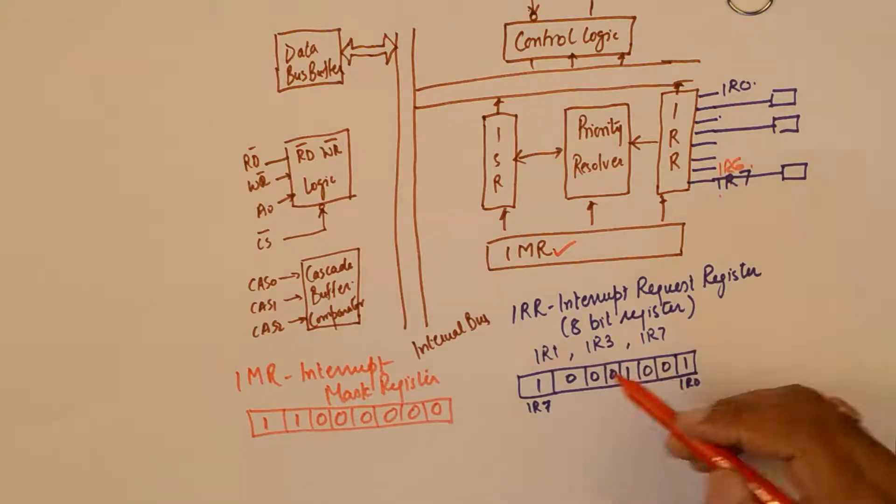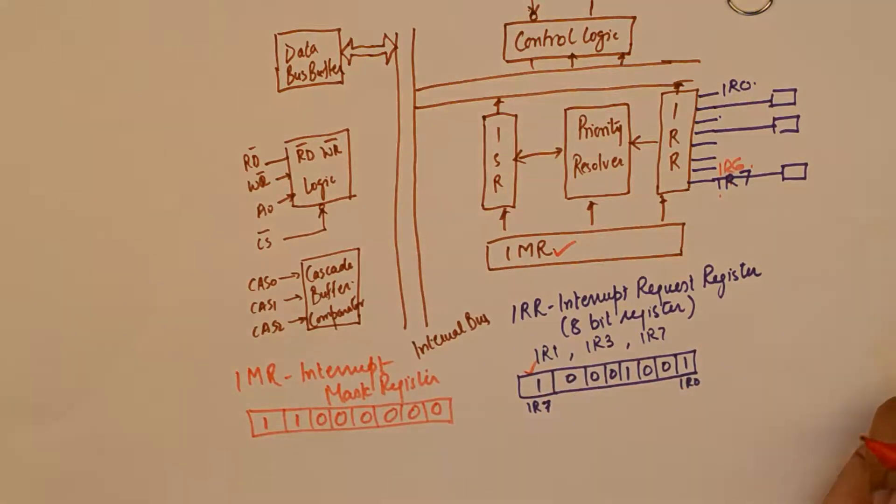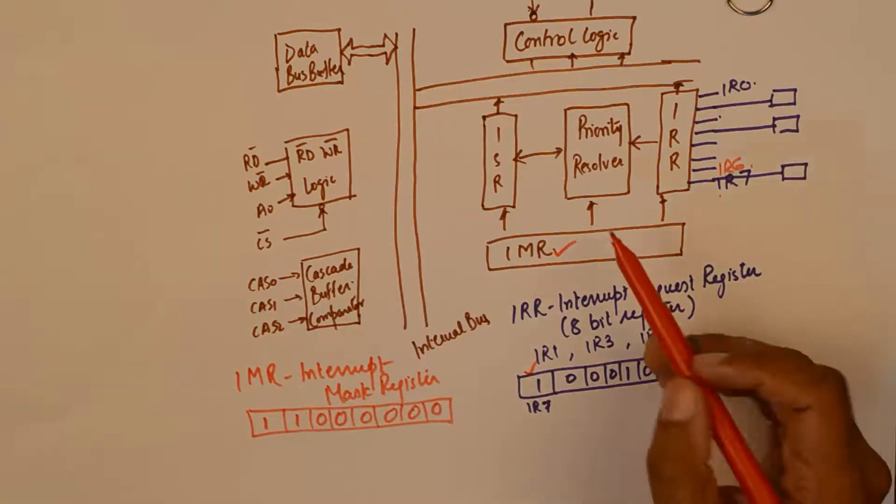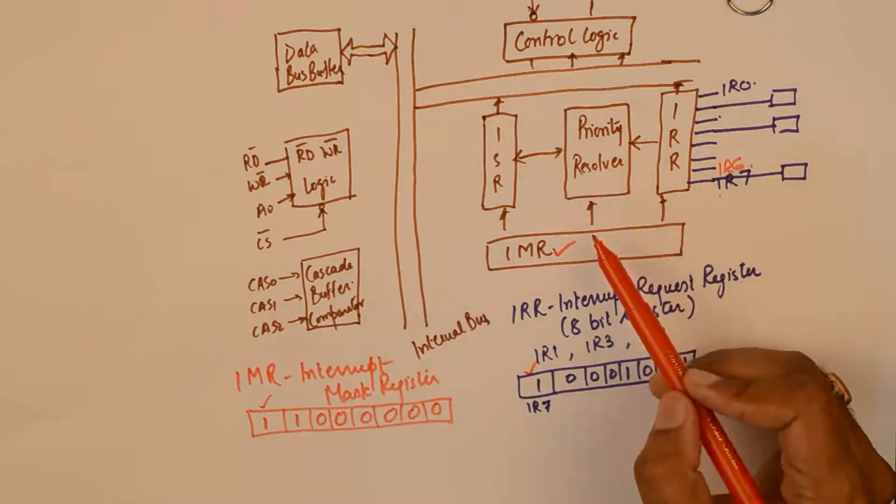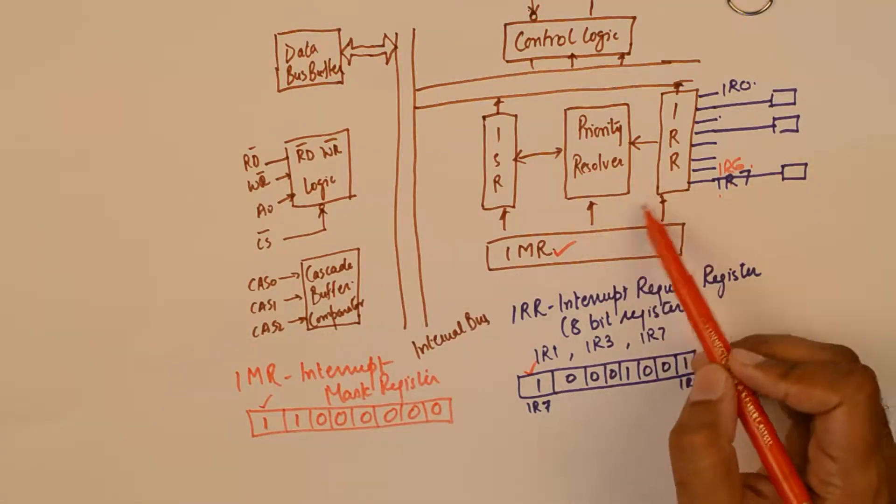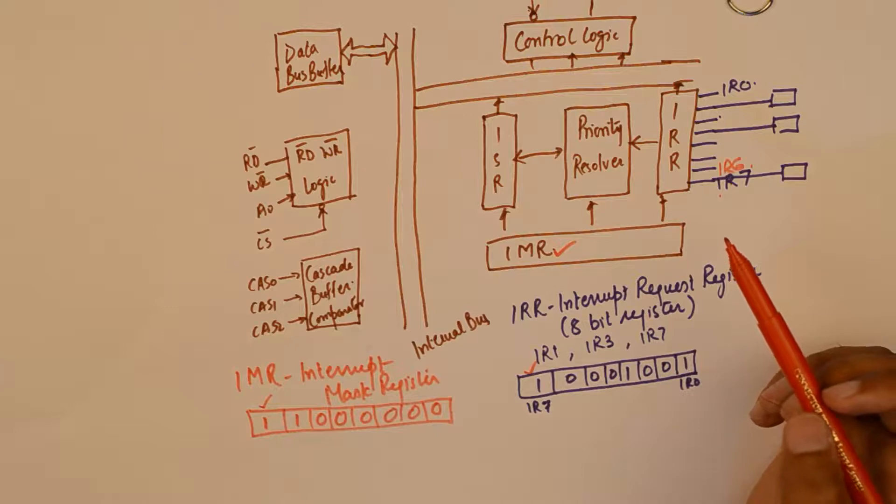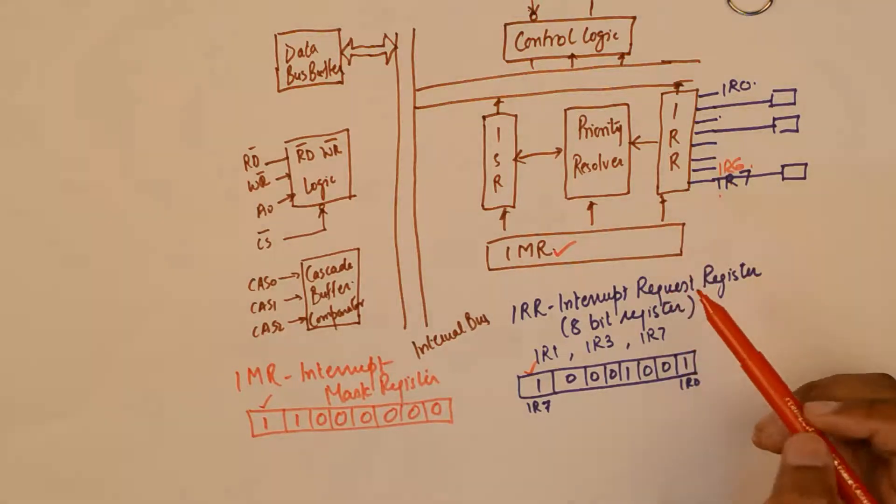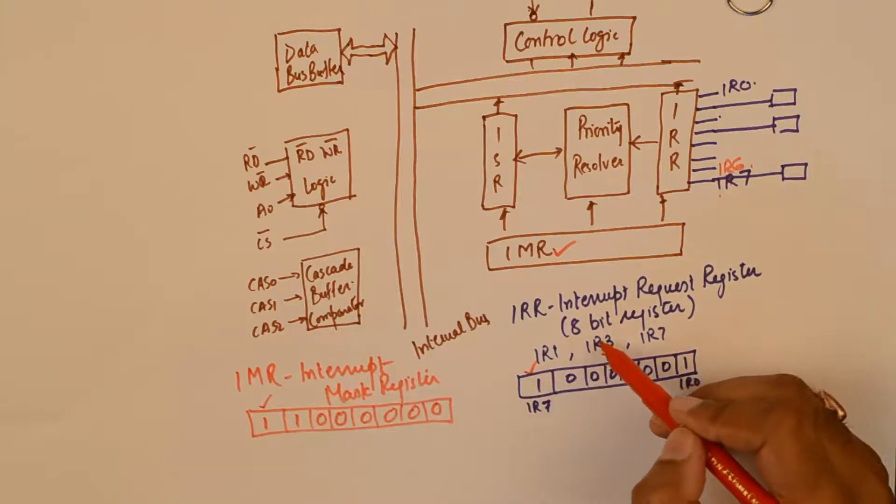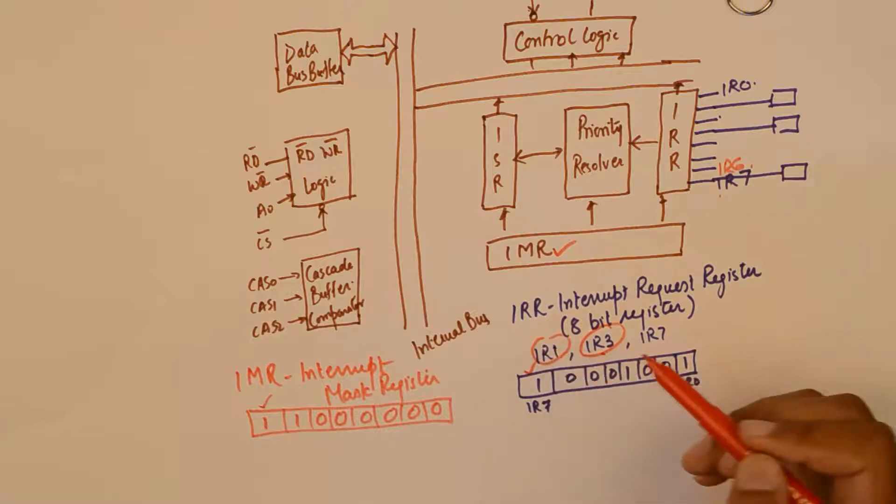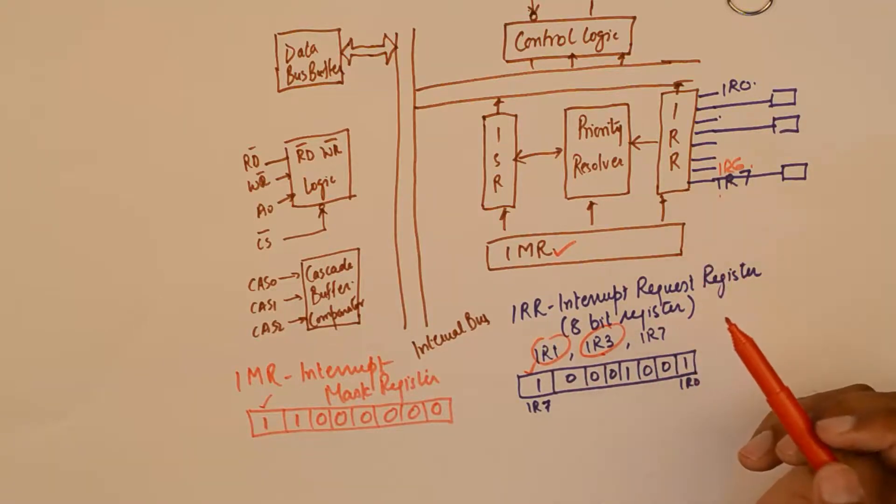Now please understand these two registers will work in conjunction with each other. Although we have gotten a request on IR7 for microprocessor services but this is masked in interrupt mask register. So priority resolver will check both these registers and it will decide that only IR3 and IR1 are eligible for microprocessor services.